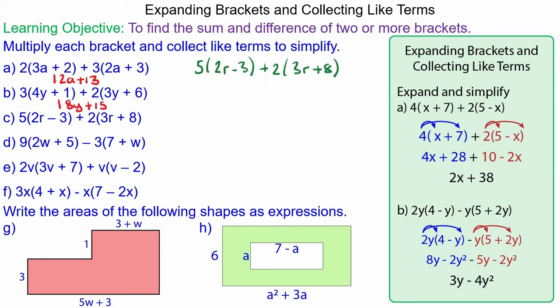For question c we have 5 lots of 2r which is 10r. We have 5 lots of negative 3 which is minus 15, 2 lots of 3r which is 6r, and 2 lots of 8 which is 16. And collect the like terms. 10r plus 6r is 16r, and negative 15 plus 16 is positive 1.